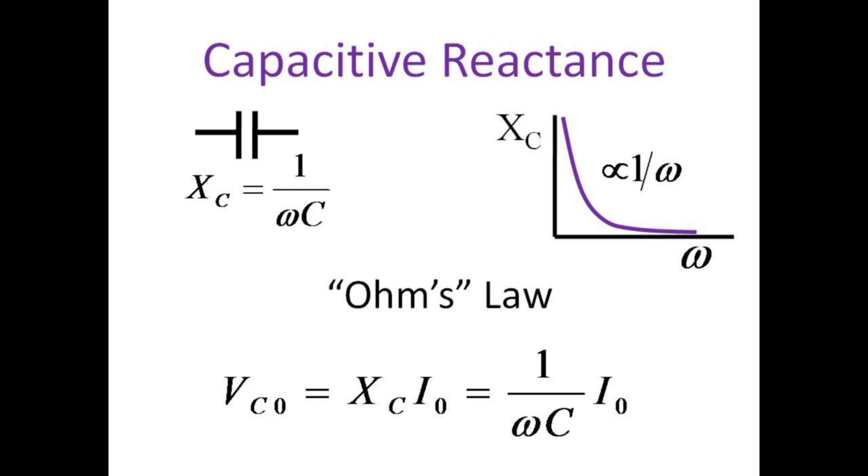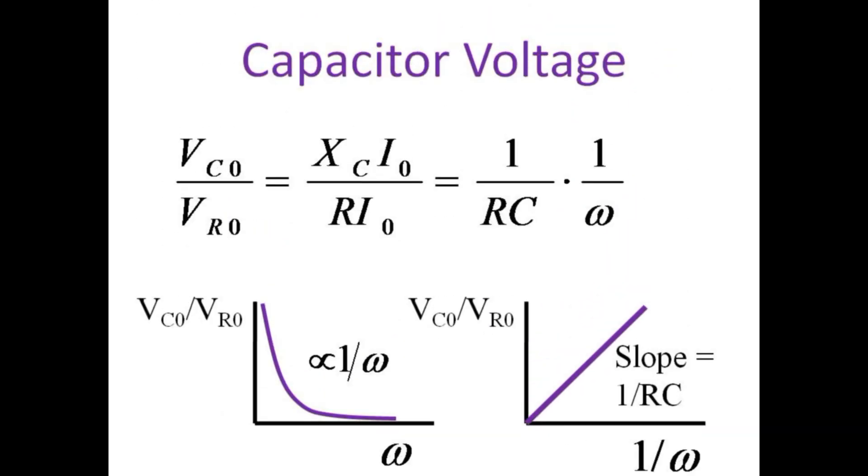The reactance of a capacitor is inversely proportional to the frequency. In this lab, we don't measure the current directly, so we can judge the effect of the capacitor with frequency by dividing the capacitor voltage by the resistor voltage. This ratio is also expected to be inversely related to the frequency. We can linearize the result by plotting the ratio of V_C over V_R versus the inverse of frequency. The result should be a straight line with slope 1 over RC. Note that this is the inverse of the time constant for this capacitor-resistor combination.